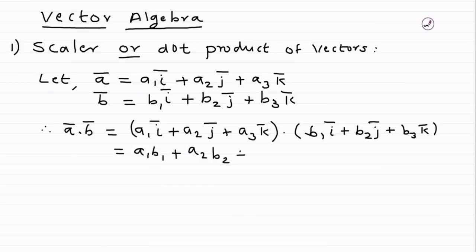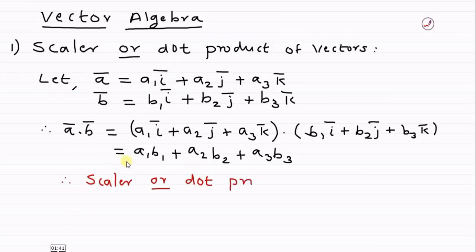So the first term is a1·b1, the second is a2·b2, and the third is a3·b3. This result is a scalar quantity — it has no direction part, no i, j, or k associated with it. Therefore, the scalar or dot product is a scalar quantity.